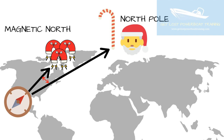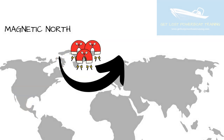Why don't we just orientate our charts towards magnetic north and be done with it? Charts are orientated towards the north pole — true north — because it's a fixed position on the globe and it doesn't move. However, magnetic north does move. The magnetic pole is currently moving east around the top of the planet, and because it moves consistently, it's impossible to orientate a fixed chart towards a moving object.